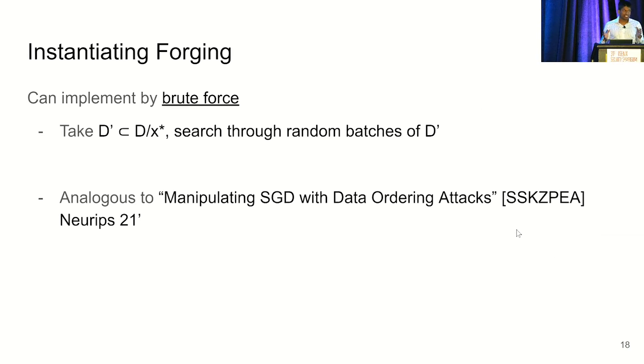But the nice thing of this probabilistic notion is it kind of gives an intuitive way to instantiate forging, because what we're saying is that some batch works. So if I kept checking batches, maybe I'll find that batch. And so to illustrate this, in this paper, what we consider is we have a particular data point to unlearn, and we'll take as our forging data set some subset of D remove that point to unlearn. And what we'll do is when given an update to forge, an update that used the data point to unlearn, we'll search through some random batches of D prime, and hopefully one of them will be good enough. And this approach is analogous to manipulating SGD with data ordering attacks, where they also consider brute forcing through batches to do adversarial things, but different adversarial goals.